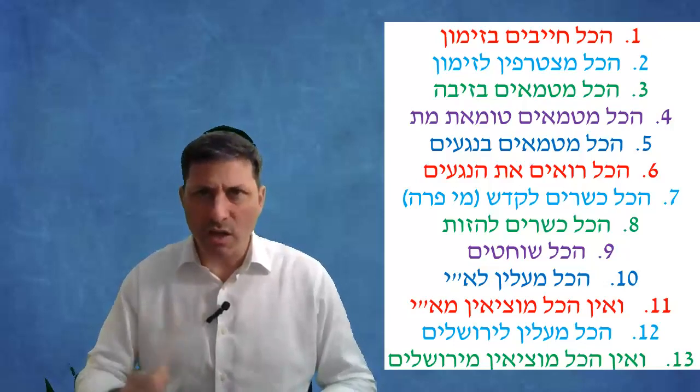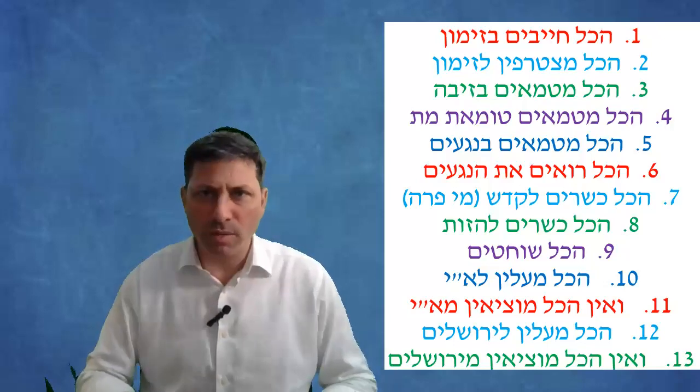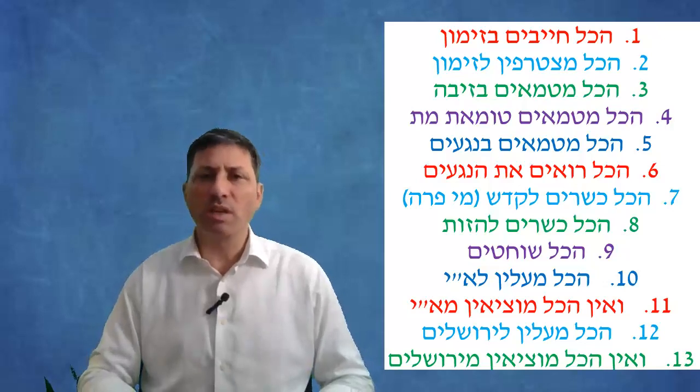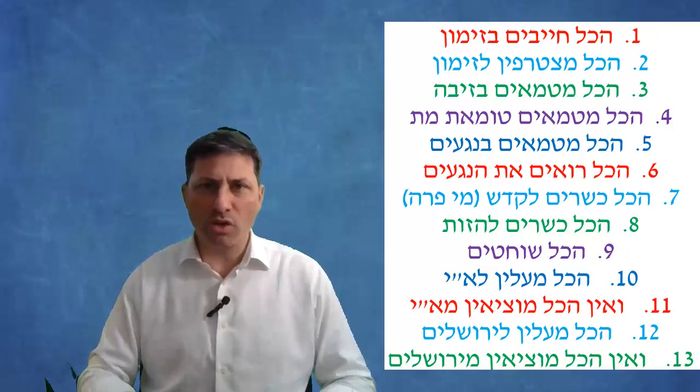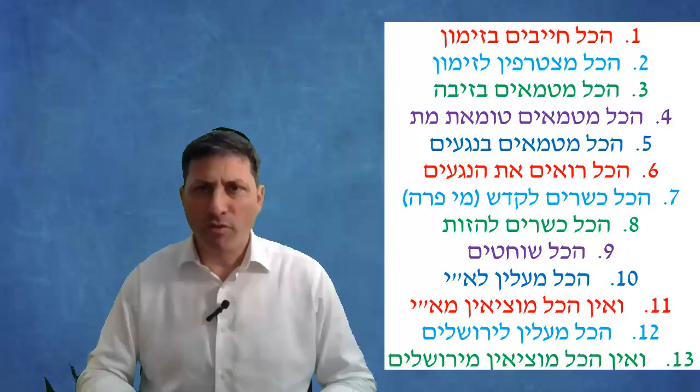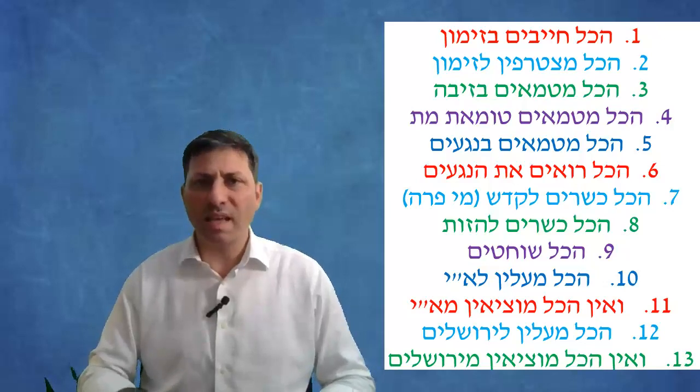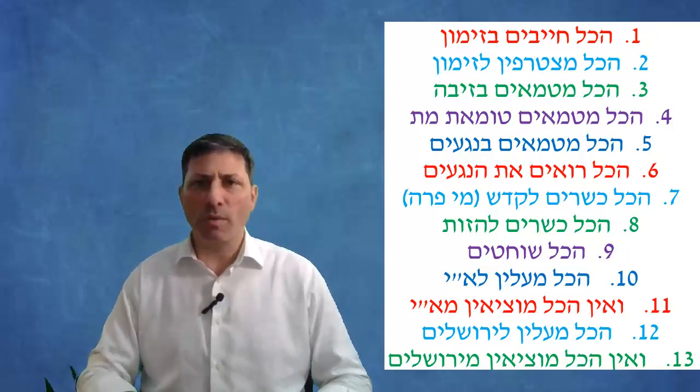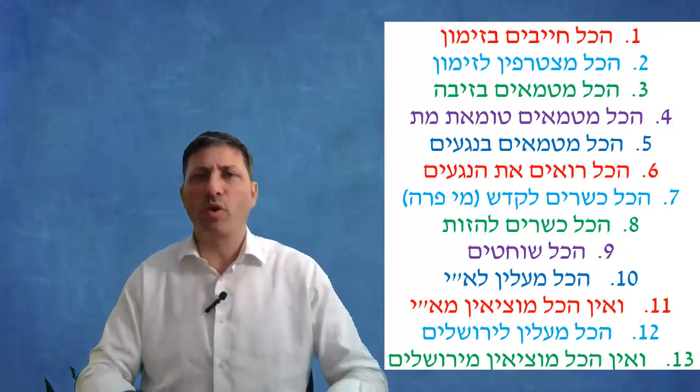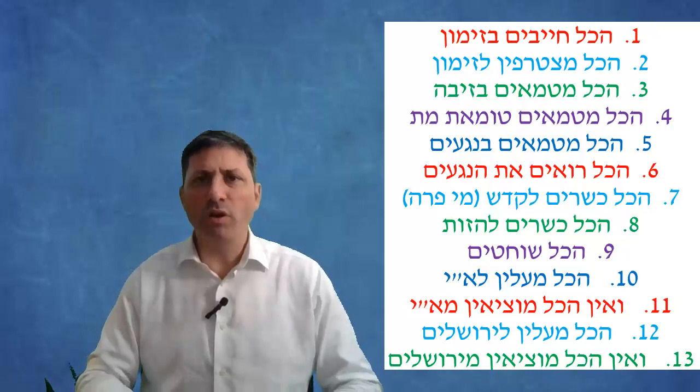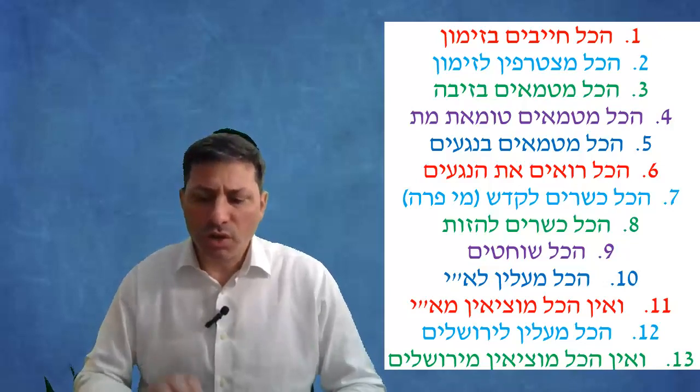It comes to include an arel, somebody that doesn't have a bris milah, not because he's a rasha but because his brothers died from bris milah, so he has a halacha like tvul yom. And we learn from a tvul yom - somebody that's tamei went to the mikvah, just waiting for nightfall to become tahor. He's asur to eat terumah but he's kosher to do the hazah of para aduma.